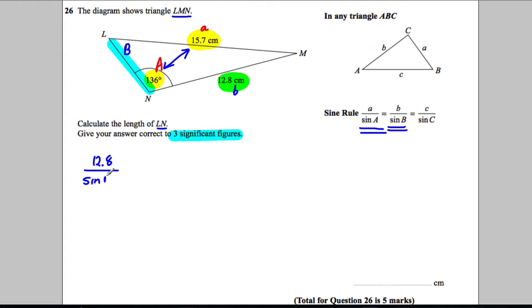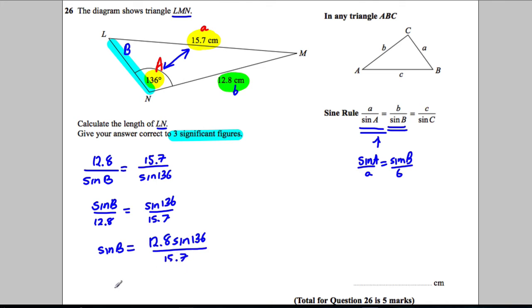12.8 over sine B is going to be equal to 15.7 over sine 136. Now we could flip both of these, or you would remember at the start that sine a over little a equals sine B over little b is the formula - we could use it or we could flip it at this stage, so sine B over 12.8 is equal to sine 136 over 15.7.